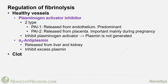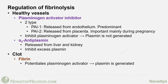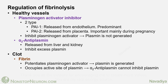On the other hand, in the clot, fibrin potentiates tissue plasminogen activator so plasmin is generated. Also, fibrin occupies the active site of plasmin so alpha-2 antiplasmin cannot inhibit it. In short, the presence of fibrin increases plasmin activity. That's finally it for this video.